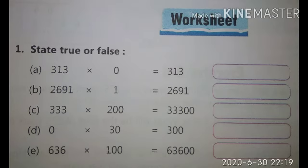Children, question number one is state true or false. 313 multiplied by zero. Children, we know when we multiply any number by zero we get zero as a product. But here answer is 313. That's why it is false.